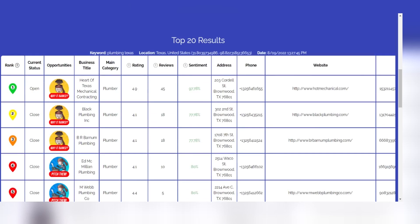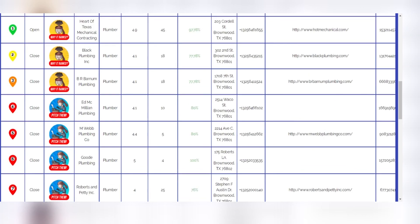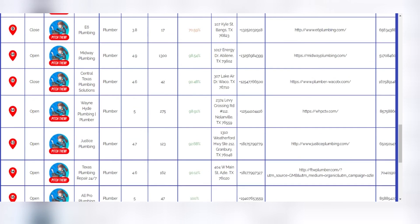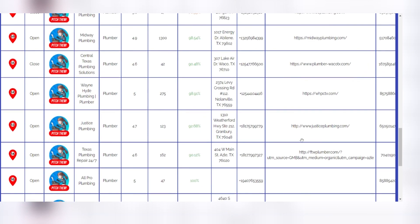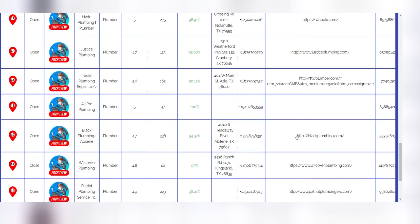Other easy-to-contact businesses include all those that use UTM tracking codes — this means they are already investing energy to track organic traffic from the map — all those businesses that still have HTTP sites, and all those businesses that have an excellent rating and many reviews but fail to perform in the top positions.